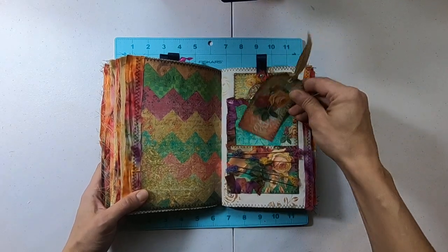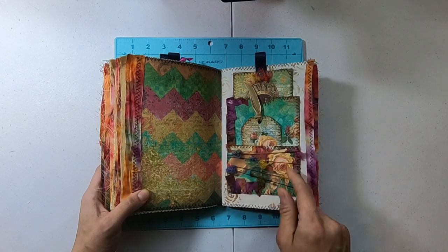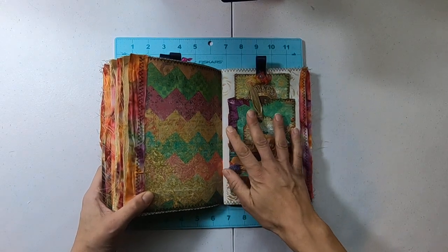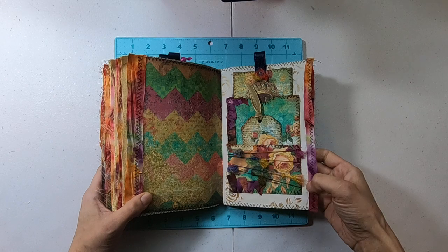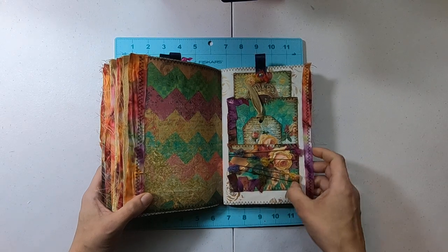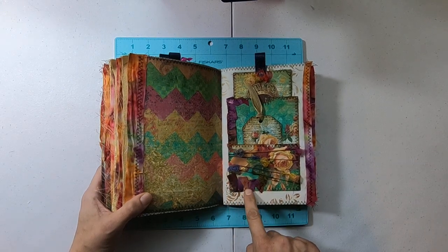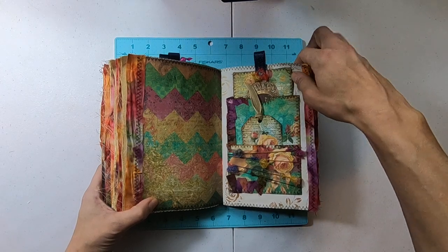Journaling card, tag. Some more of this yarn. I wrapped it around before I attached the pocket. Gives a really cool texture. And then there's some fabric and little things.